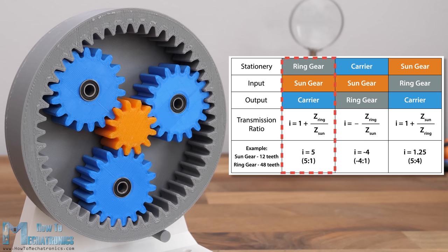We can see that the highest transmission ratio is achieved when the sun gear is the input and the ring gear is held stationary. The planet carrier is the output and the ratio is 1 plus the ring gear teeth number divided by the sun gear teeth number.